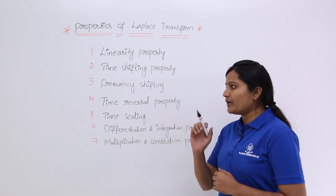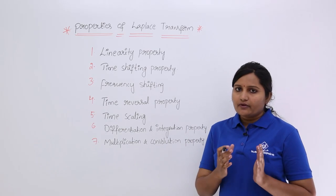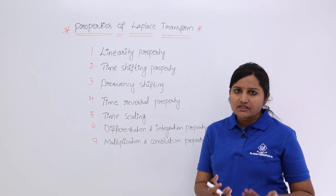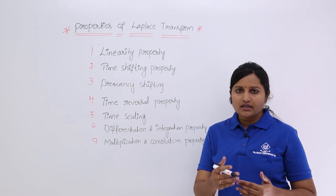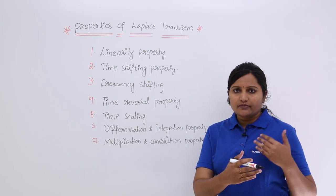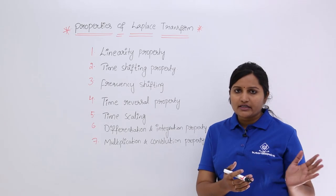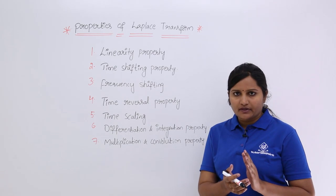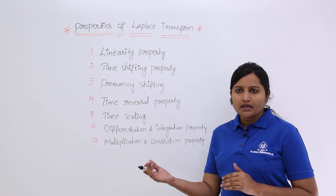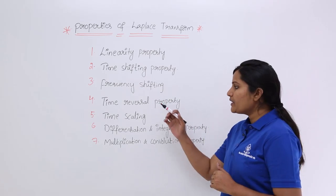Coming to the frequency shifting property. Here, for example, if you are adding any extra frequency component to the signal — if you have a transform for a signal and you shift the frequency — then what may be the resultant transform. That we are going to show in the frequency shifting property.